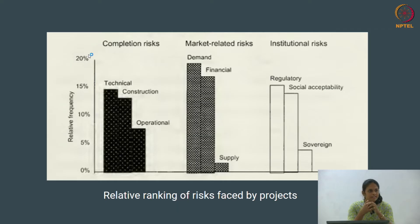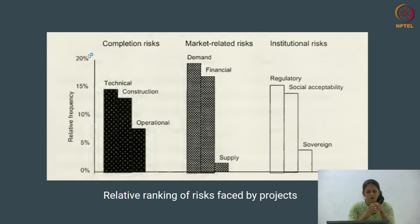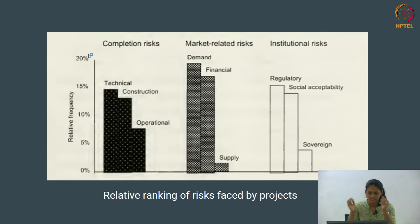An analysis from several managers of various projects divided all risks into three categories: completion risks, market-related risks, and institutional risks. They found that the dominant risks were market-related risks, followed by completion risks, and then institutional risks.